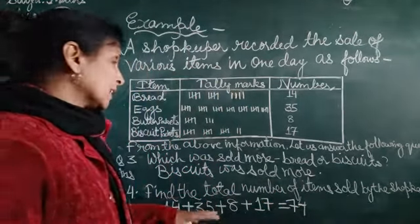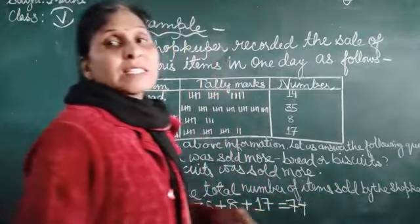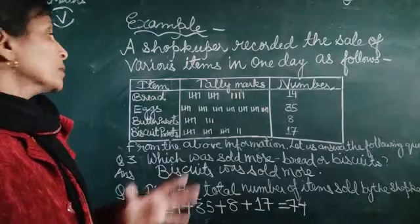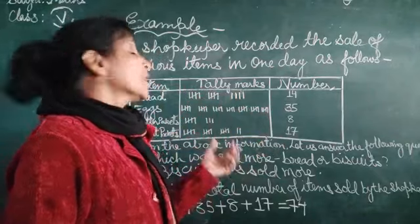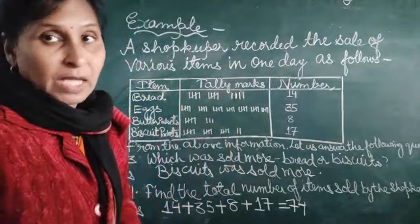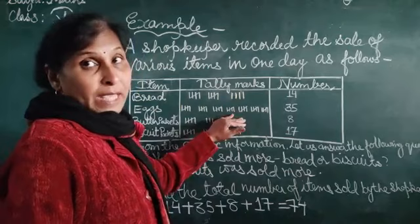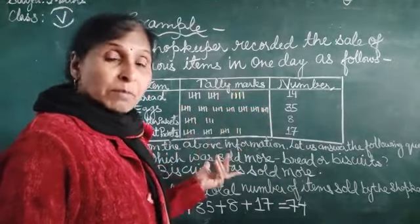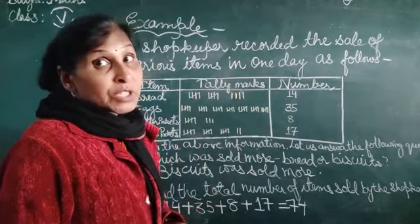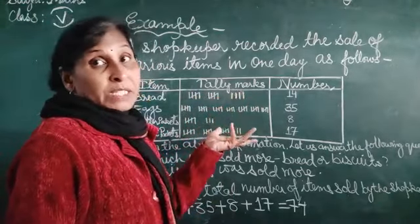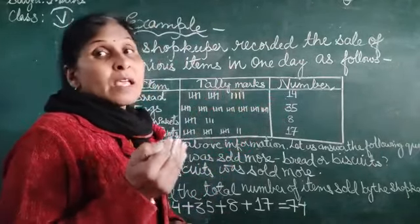We can write like this the total number of items sold by the shopkeeper is seventy-four. So in this way if information is given and asked questions then we will see our answers and if our information is given and we will draw our tally marks then we will draw our tally marks if we have questions given then we will answer answers so in any form we can ask questions for tally marks to draw the number given and tally marks to draw the answer means that you can answer your question.